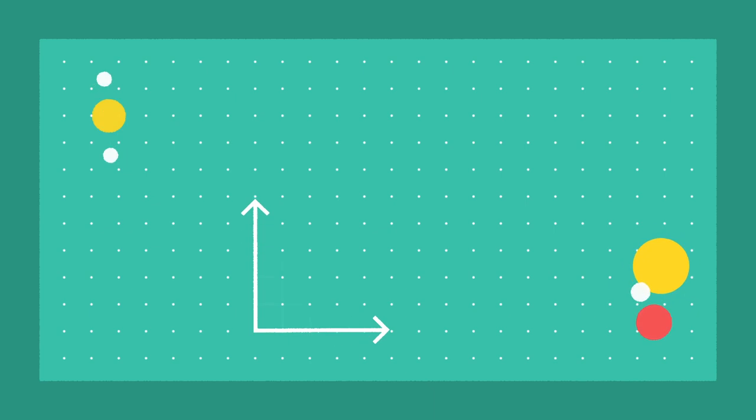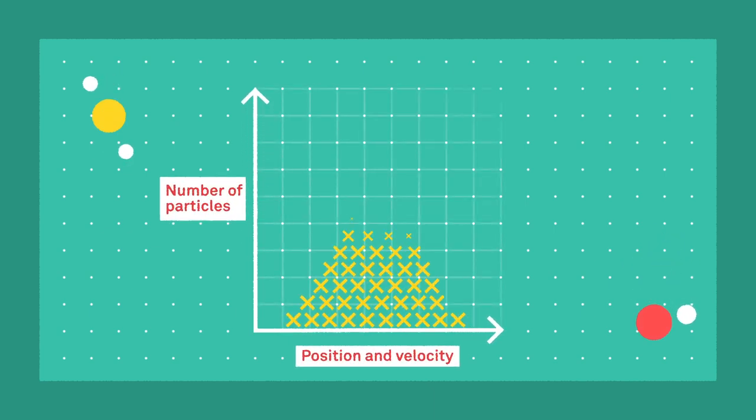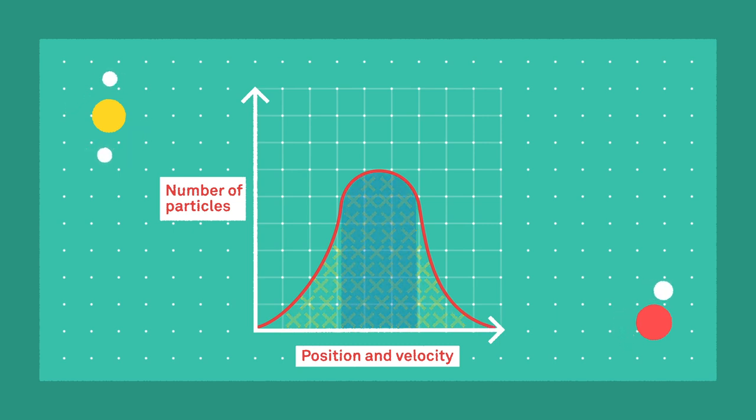With Boltzmann's view, we look at particles in aggregate, with a function that addresses the proportion of particles having a given position and velocity. This is called the probability distribution function, f.